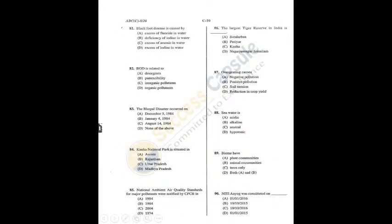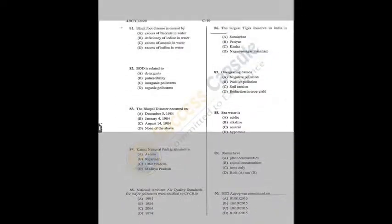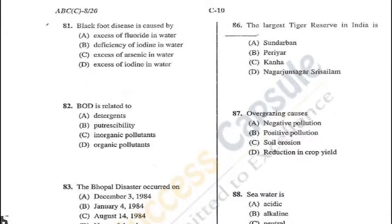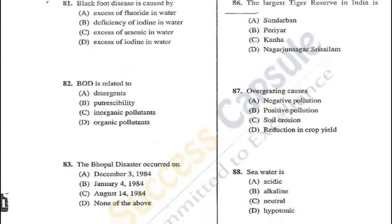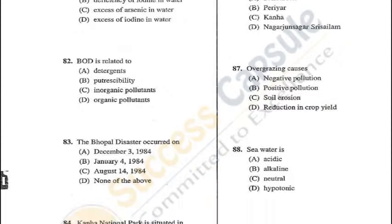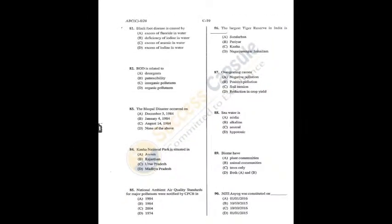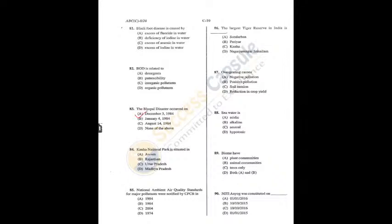Question 81: Blackfoot disease, which is very common in West Bengal, is caused by excess arsenic in water — C is the correct answer. Question 82: BOD is related to organic pollution or organic pollutants. It is a measure of the amount of oxygen required to remove waste organic matter from water — D is the answer.